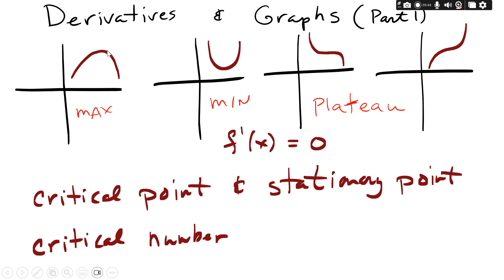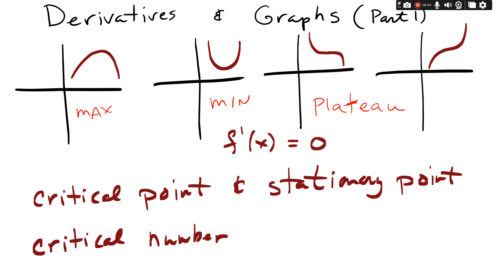When the slope hits zero at a peak you get a maximum; when it goes down, turns around, and comes back up you get a minimum. You can also have a plateau: the slope hits zero for just a split second in the middle of going down, then continues down — or it's going up, hits zero, then goes back up. So if the derivative equals zero you have one of these four possibilities.